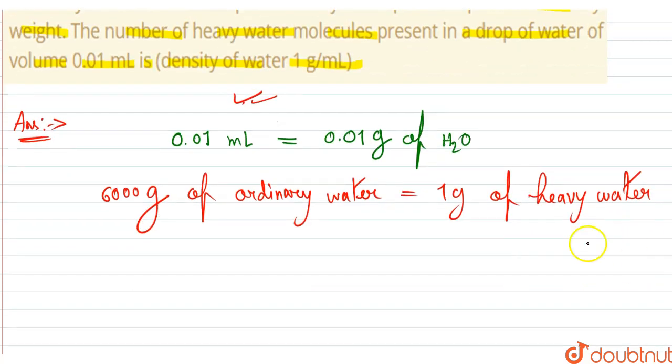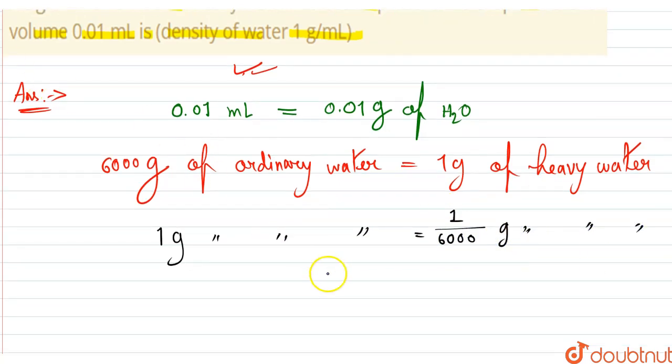So therefore one gram of ordinary water corresponds to one by 6000 gram of heavy water.